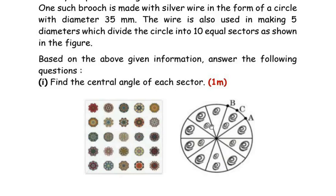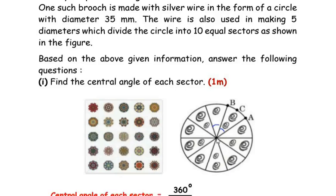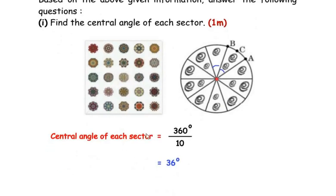The entire angle at the center of the circle is 360 degrees, and this is divided into 10 equal parts. So the central angle of each sector is 360 divided by 10, which gives us 36 degrees. This is the central angle of each sector — our answer.